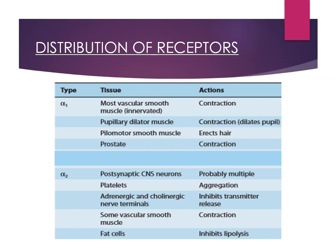Next, alpha 2. Alpha 2 receptors are basically present pre-synaptically on adrenergic and cholinergic nerve terminals, and they inhibit transmitter release. So if the adrenergic neuron receptor is pre-synaptic, it will inhibit the norepinephrine release when stimulated. Also on some vascular smooth muscles, fat cells where it inhibits lipolysis, and platelets. This is GI coupled, reducing cyclic AMP — so remember inhibitory actions. The main thing is that it inhibits the release of norepinephrine from pre-synaptic receptors.